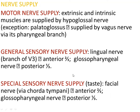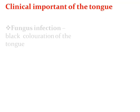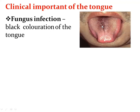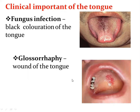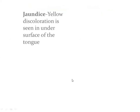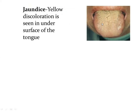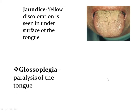These are the nerve supply details. Now we will see the clinical importance of the tongue. Fungal infection causes black coloration of the tongue, as you can see here. Glossitis means a wound of the tongue. Jaundice causes yellow coloration of the tongue.